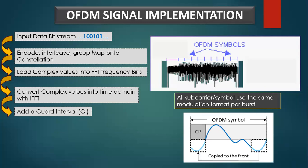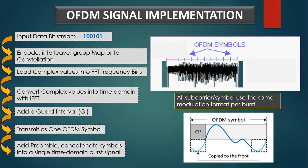To complete the OFDM symbol, a guard interval is added to the beginning of the OFDM waveform, producing a single OFDM symbol. This process is repeated to create additional OFDM symbols for the remaining input data bits. To complete the OFDM frame structure, the individual OFDM symbols are concatenated together and appended to a preamble, which is used for synchronization. This completes the OFDM frame, which is ready to be transmitted as an OFDM burst.